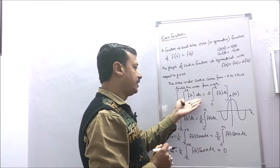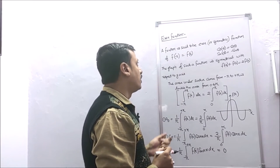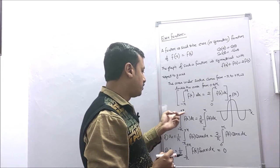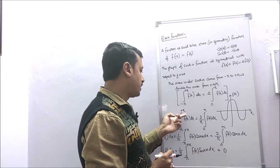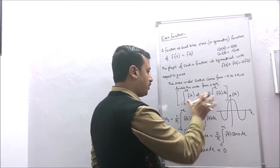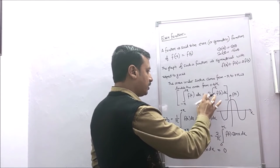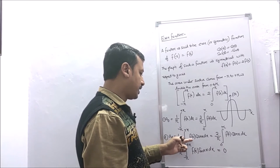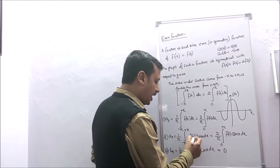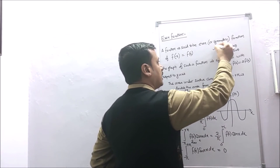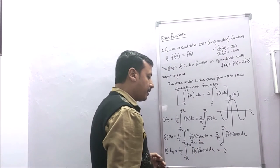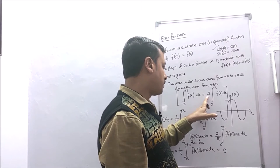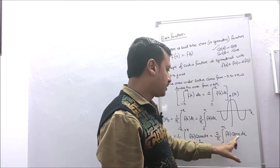Using these properties, we derive the Fourier coefficients for an even function. a0 = (1/π) ∫ from −π to +π f(x) dx = (2/π) ∫ from 0 to π f(x) dx. For an, since f(x) is even and cos(nx) is also even, their product is even, so an = (1/π) ∫ from −π to +π f(x) cos(nx) dx = (2/π) ∫ from 0 to π f(x) cos(nx) dx.